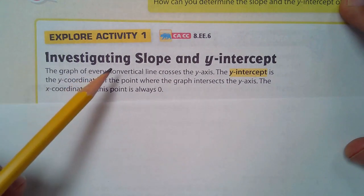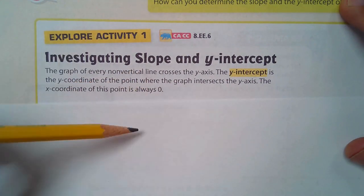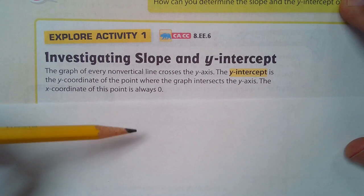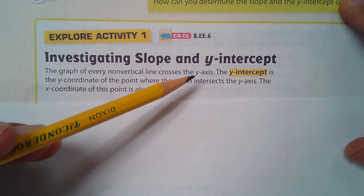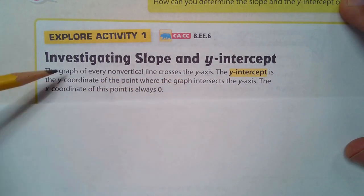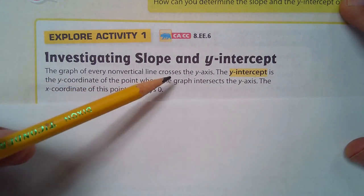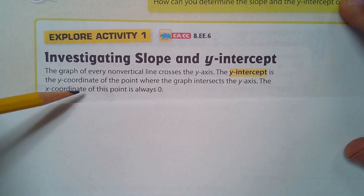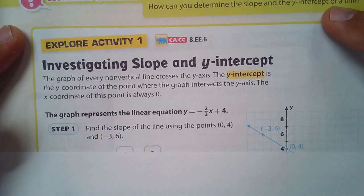The graph of every non-vertical line crosses the y-axis. The y-intercept is the y-coordinate of the point where the graph intersects the y-axis. The x-coordinate of this point is always zero.